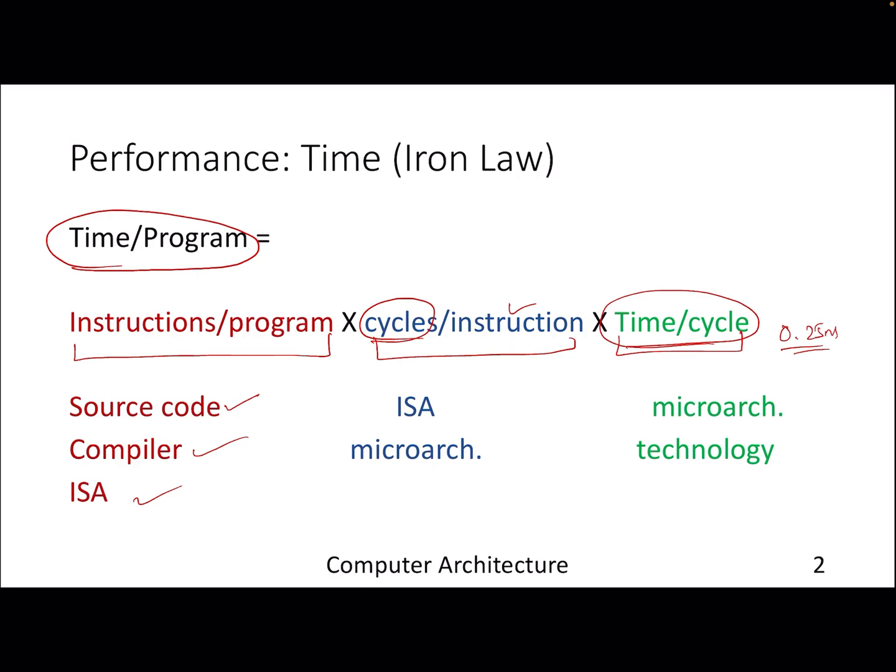If you look at the first part, that's driven by when you write your program and what compiler optimizations are performed. But the main key that defines the time per program is the cycles per instruction, the middle one. Because this is constant once you fix your processor frequency. This is the middle ground where you can actually try to improve your performance by coming up with micro architectural ideas.